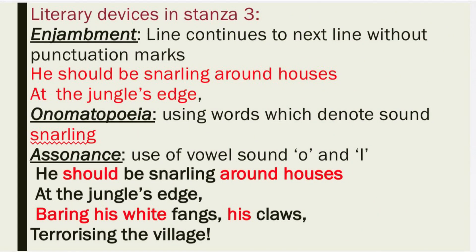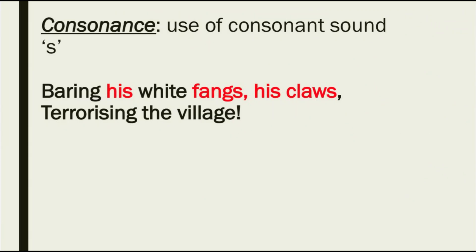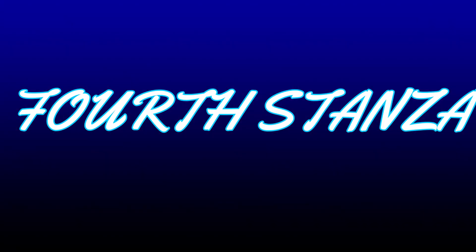Literary devices used in stanza 3: Enjambment — 'He should be snarling around houses / At the jungle's edge.' Onomatopoeia — the word 'snarling' denotes sound. Assonance — use of vowel sounds 'o' and 'i' in 'snarling around houses at the jungle's edge, baring his white fangs, his claws, terrorizing the village' — 'around' and 'houses' carry the 'o' sound, while 'baring his white' and 'his' carry the 'i' sound. Consonance — use of consonant sound 's' in 'his fangs, his claws.'